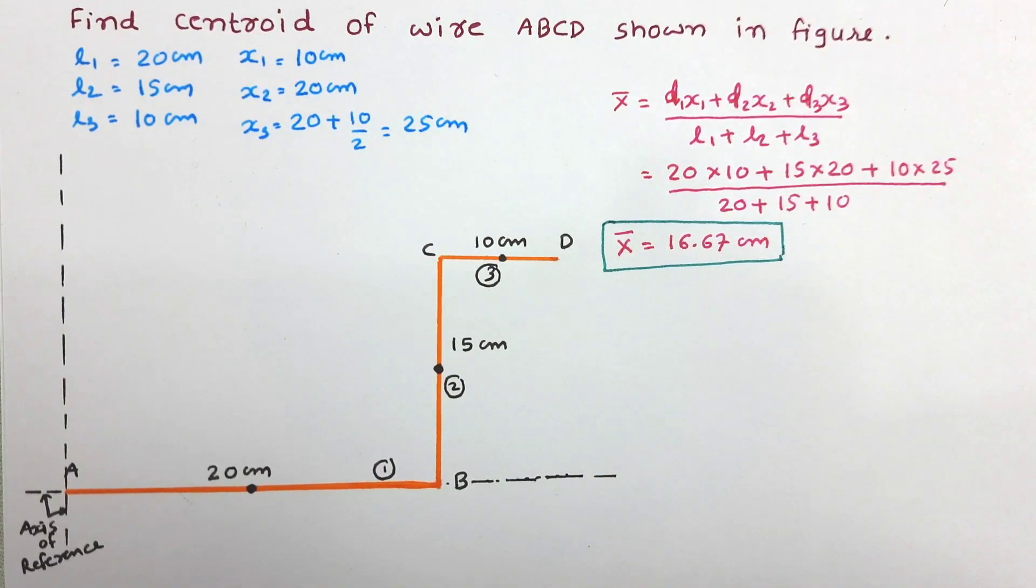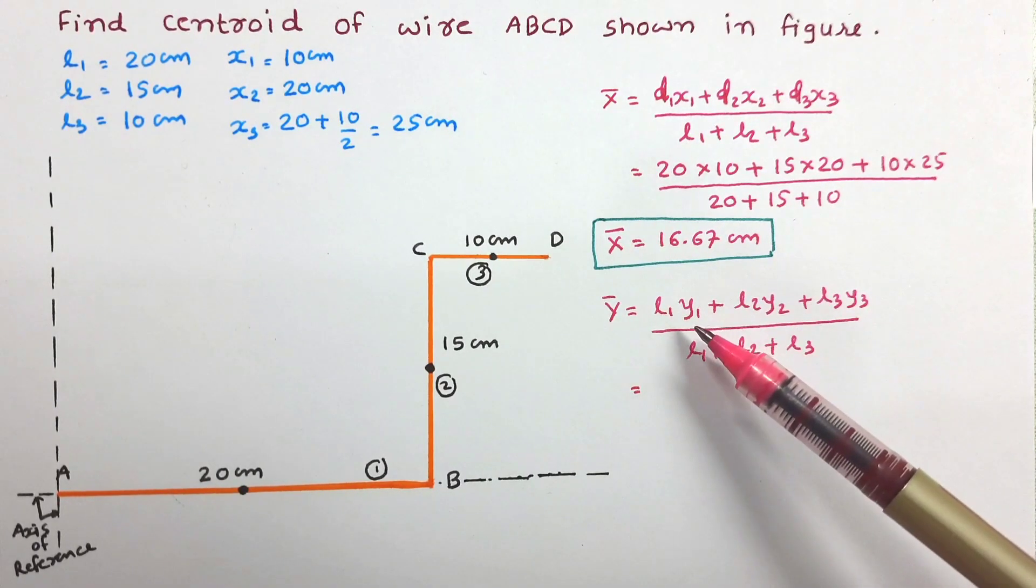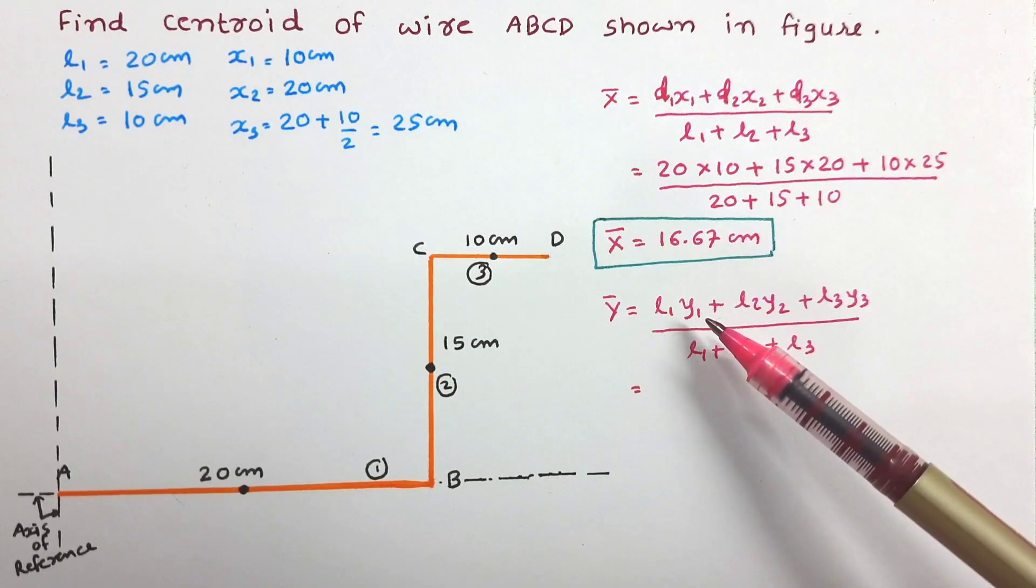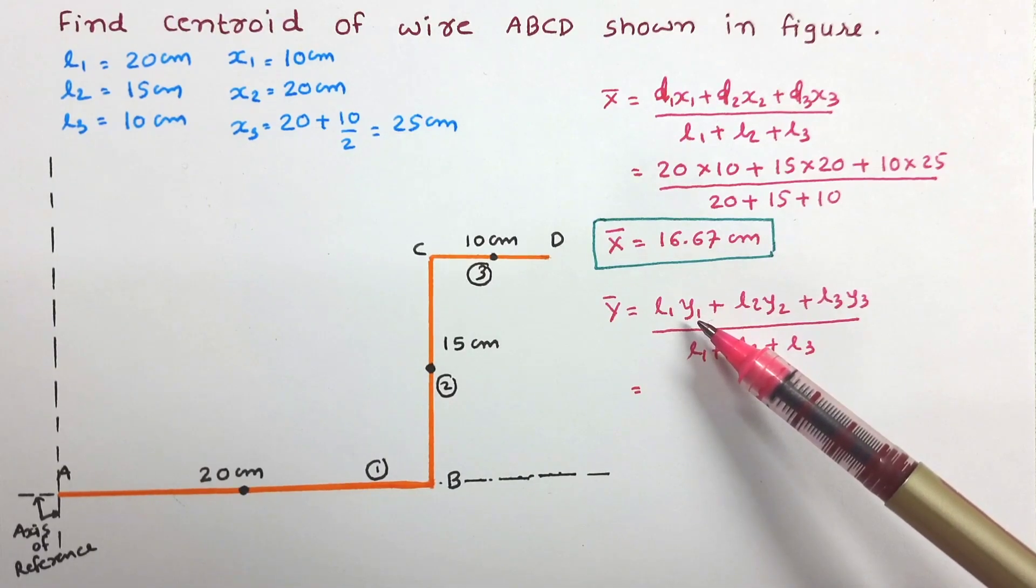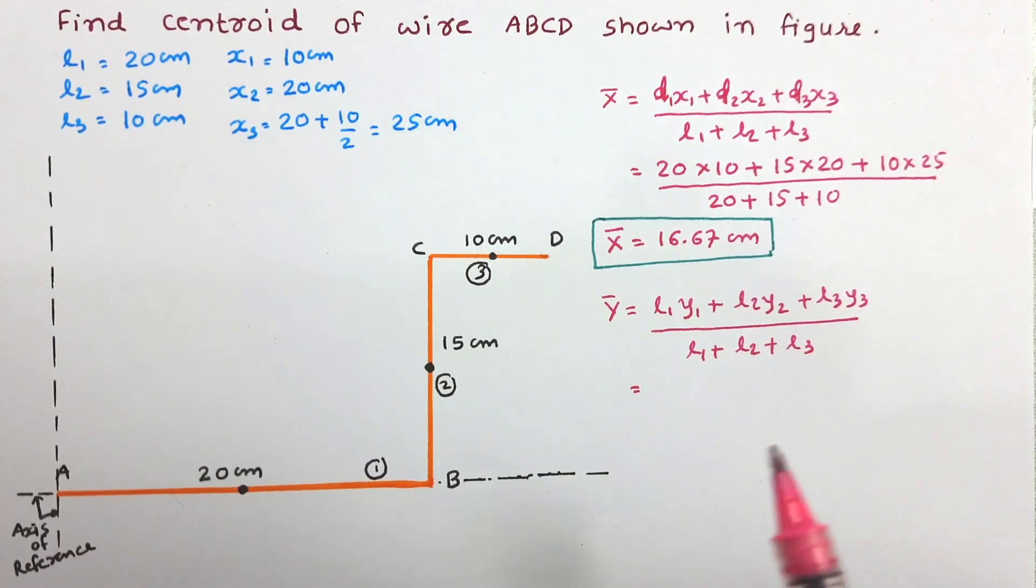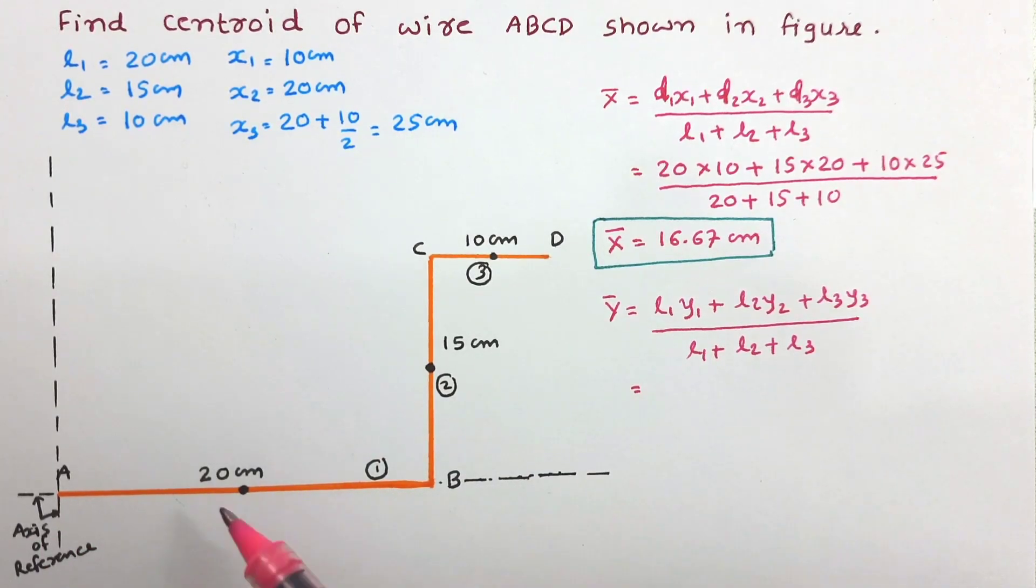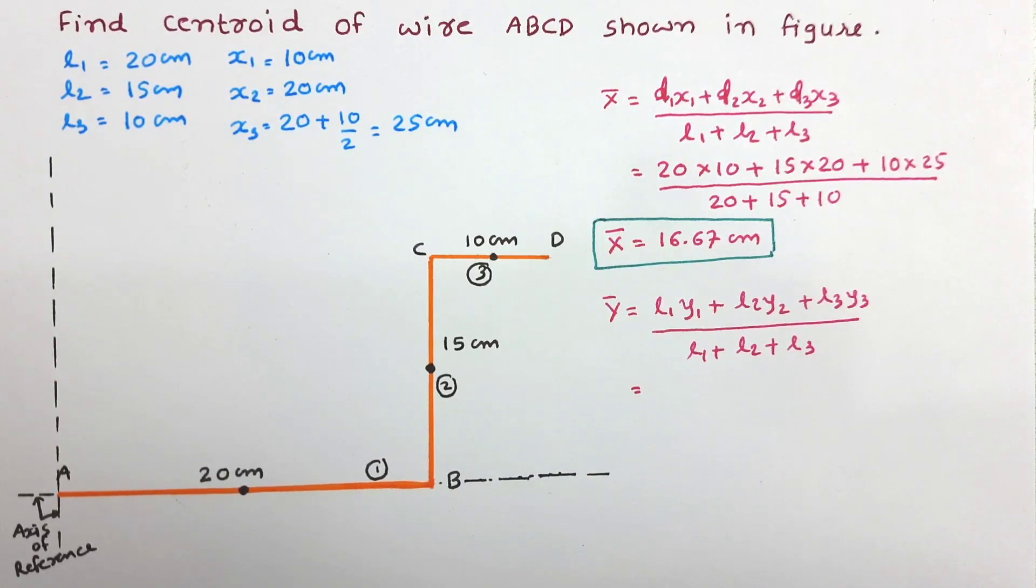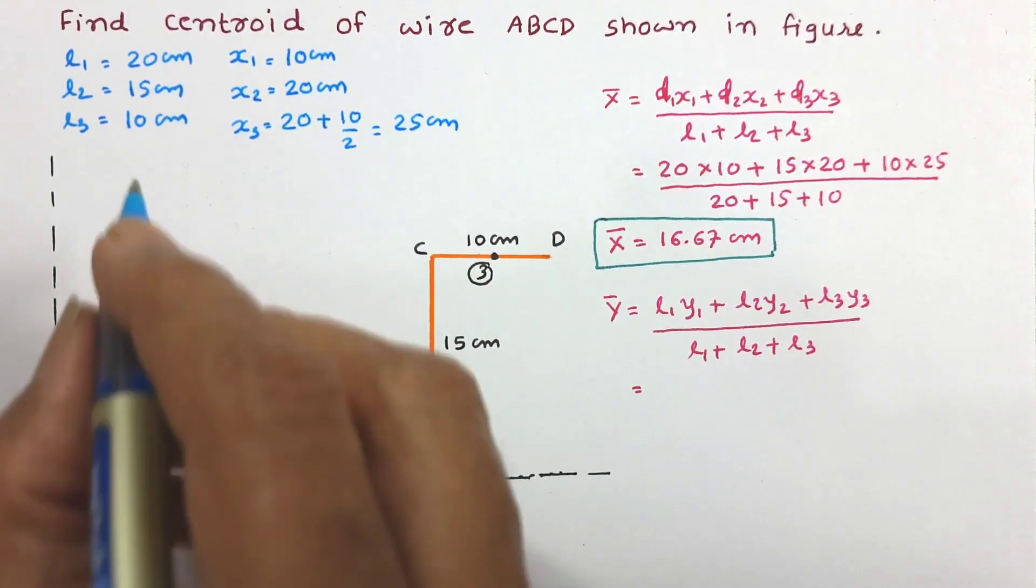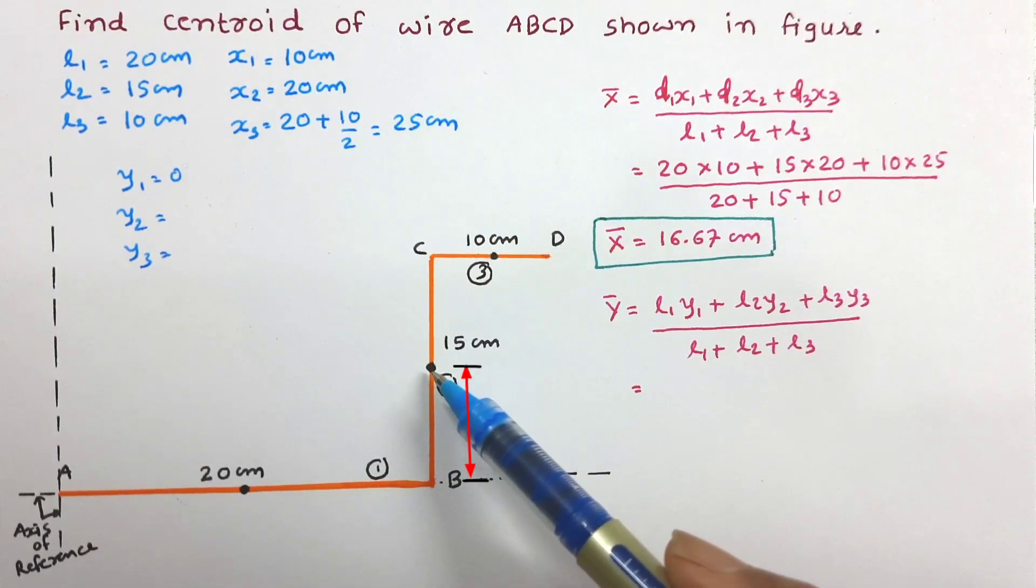Now let us work out ȳ. So l₁, l₂, l₃ are known. Now we have to work out y₁, y₂, y₃. This distance is centroidal distance of each component part from reference x axis. So y₁ is the distance of centroid of first part from this reference x axis. Now we can see this point is lying on the axis of reference only, so distance of that point from reference axis will be 0.